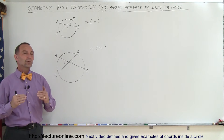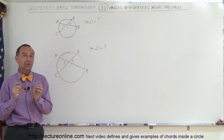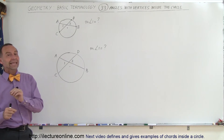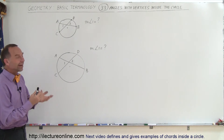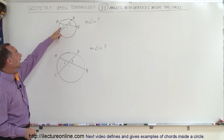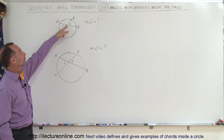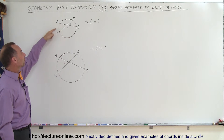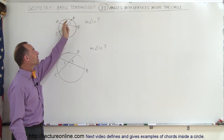Welcome to our lecture. Now we're going to look at some angles where the vertices are inside the circle, but not at the center of the circle and also not at the edge of the circle. We want to find angles in cases like that. Here's an example where we want to find angle 1 or angle 2. The vertices of those two angles are not at the center, and we have arcs from A to C and from B to D.